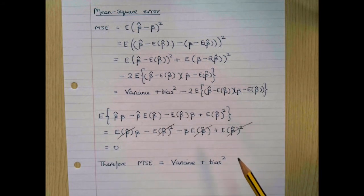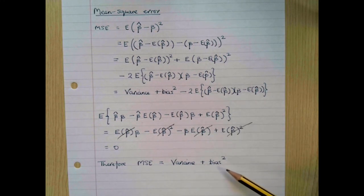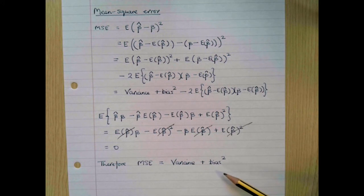As a result, we can decompose the mean square error in a very convenient way: we can write it as the variance plus the squared bias in the estimator.